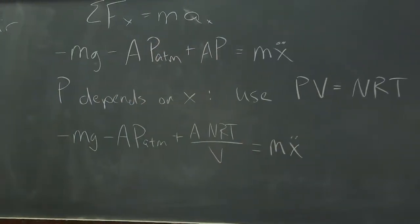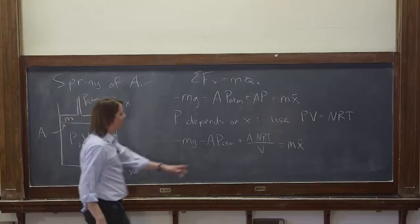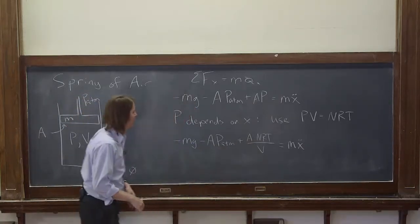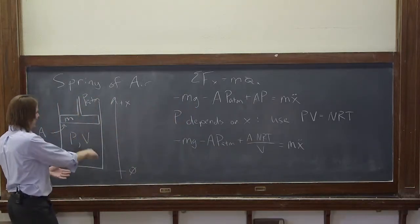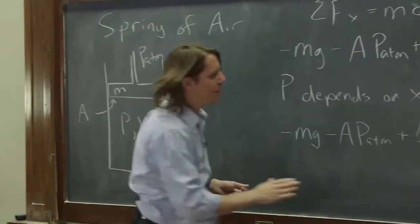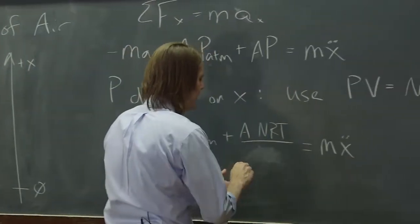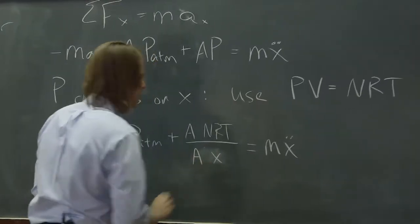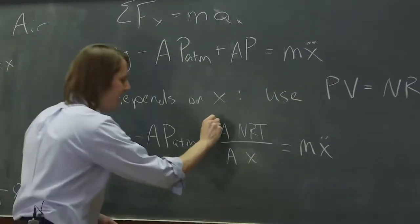We still don't have x in there, but it's hiding because of this. The volume of this thing is its height x times the area. So the volume is really A times x. Then you see the A's cancel.